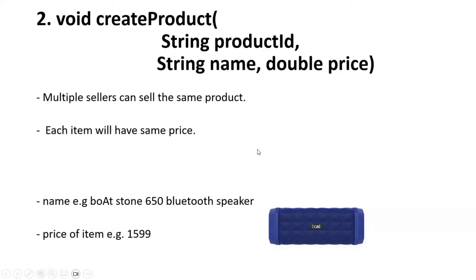The next method is create product. Each product will have an ID, name, and price — for example, product one can be a Bose Stone 650 Bluetooth speaker. Even though a single product can be sold by multiple sellers, the price across sellers for the same product will remain the same. This is just for simplicity.